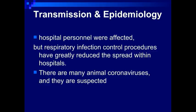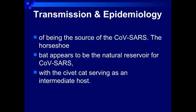There are many animal coronaviruses and they are suspected of being the source of the CoV. The bat appeared to be the natural reservoir for SARS coronavirus, with the civet cat serving as an intermediate host.